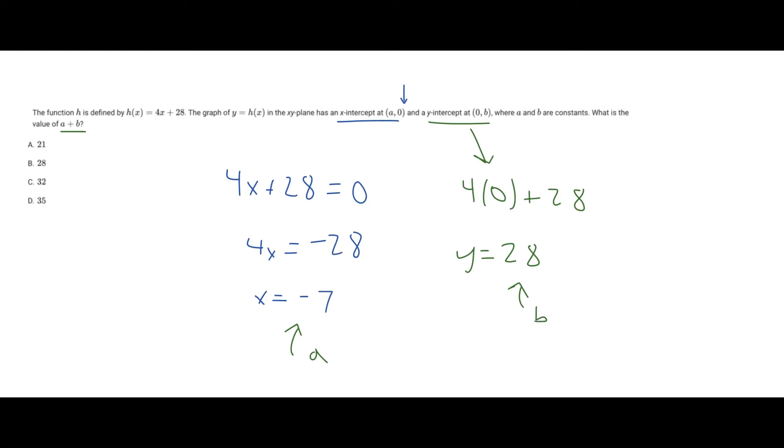So if we add them together, -7 + 28, that's going to be equivalent to positive 21. And so that is our answer.